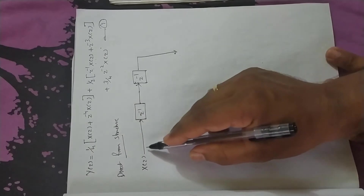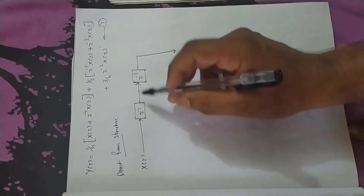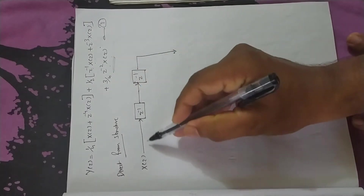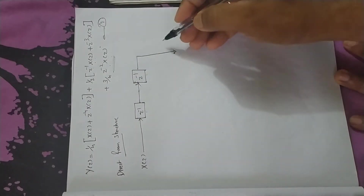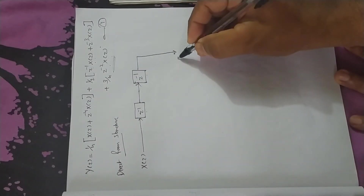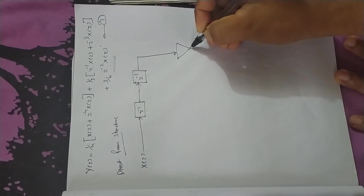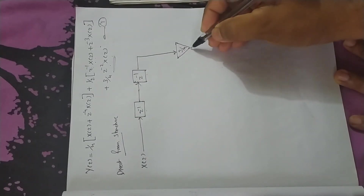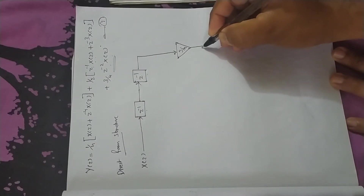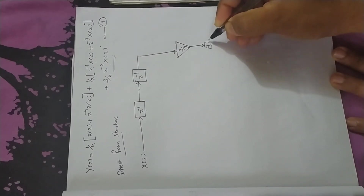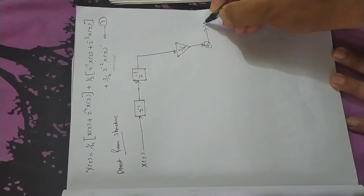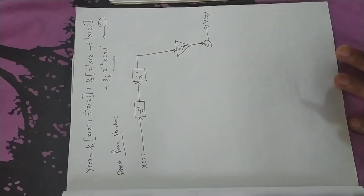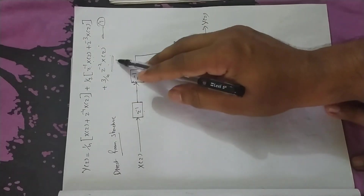We are going to get one corner with x(z). We are going to get x(z). We are going to get 3/4 multiplied. So 3/4, and Y(z). We are going to get 3/4.